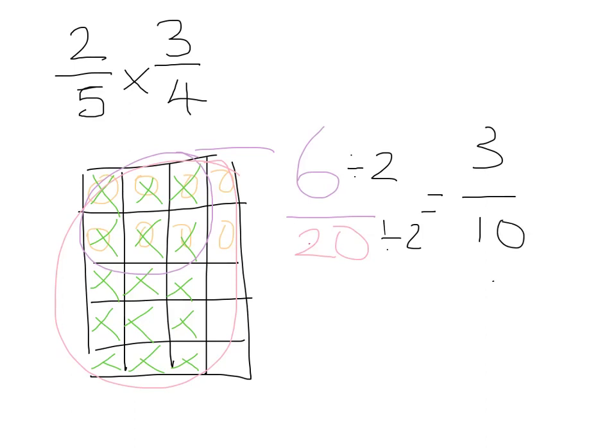Similarly, let's do the top so we can see how this would work if you were doing it in a normal way. So 3 times 2 is 6. 5 times 4 is 20. And again, I end up with the same fraction, and I reduce it in the exact same way. And I'm left with 3 over 10.